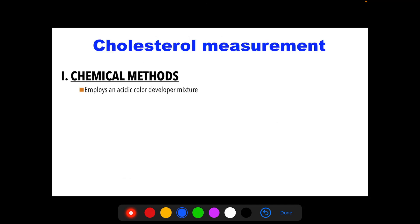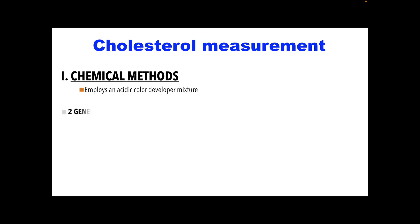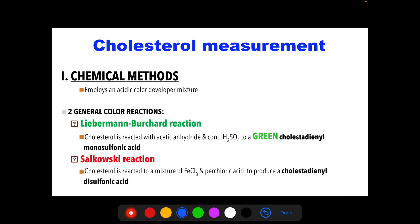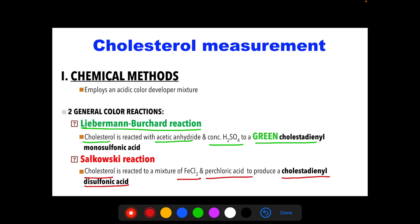Chemical methods employ an acidic color developer mixture with two general color reactions. The Lieberman-Burchard reaction produces a green end product (cholestodienyl monosulfonic acid) when cholesterol reacts with acetic anhydride and concentrated sulfuric acid. The Salkowski reaction produces a red cholestodienyl disulfonic acid when cholesterol reacts with a mixture of ferric chloride. These are the two color reactions used as chemical methods for cholesterol measurement.